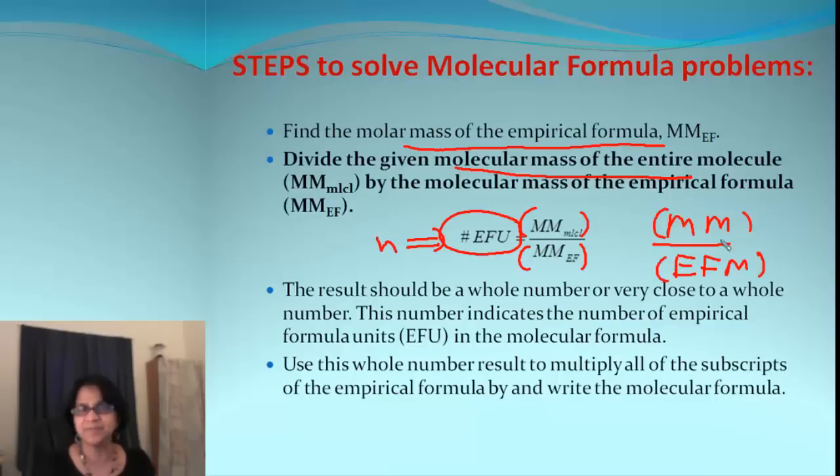That's easy. After that, you'll get a number which should be close to a whole number. If not, round it up. So maybe it's 5.9, you round it to 6, then use this whole number to multiply the subscripts of the empirical formula and you get the molecular formula.